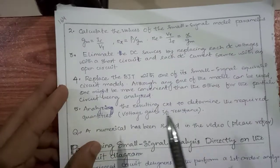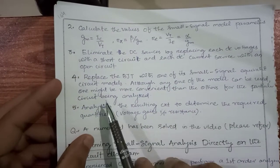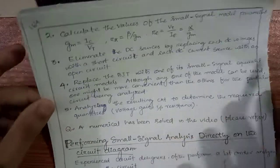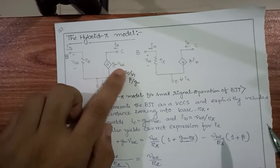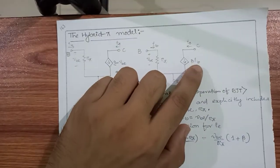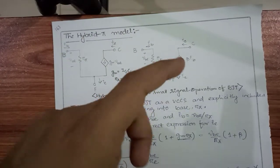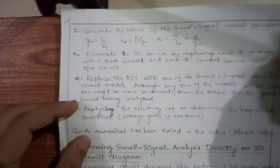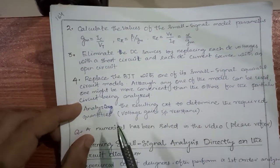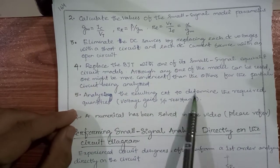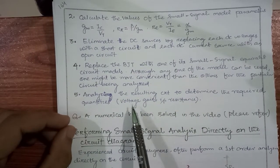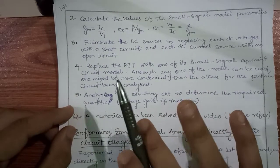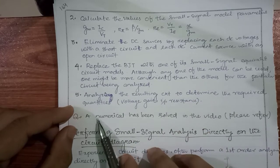According to convenience, you can take any circuit model and apply the corresponding equations. The fifth step is to analyze the resulting circuit to determine the required quantities — such as voltage gain or input resistance — whatever is asked in the question. We will now see these five steps applied to a numerical example. I have already solved that numerical to save time.